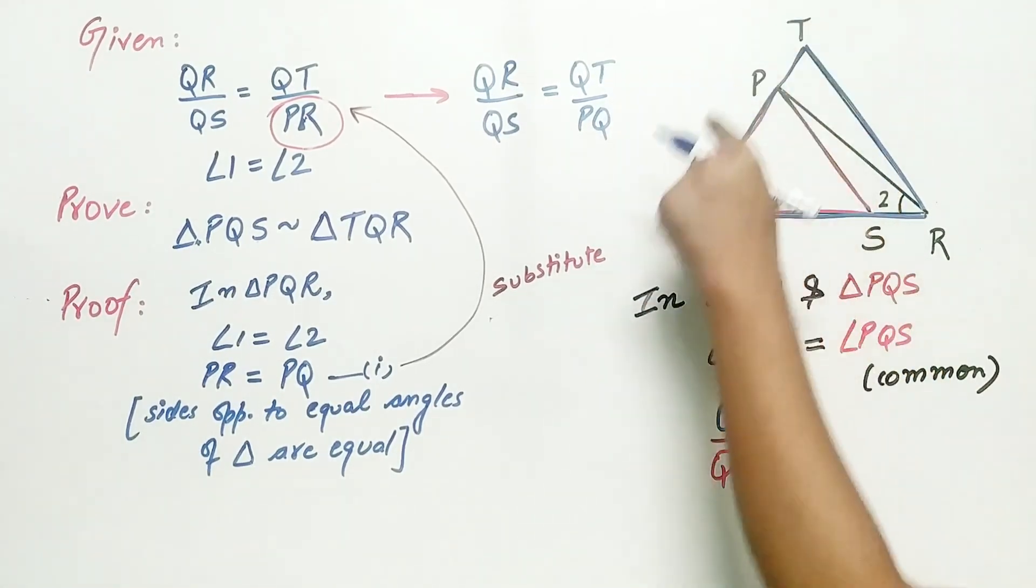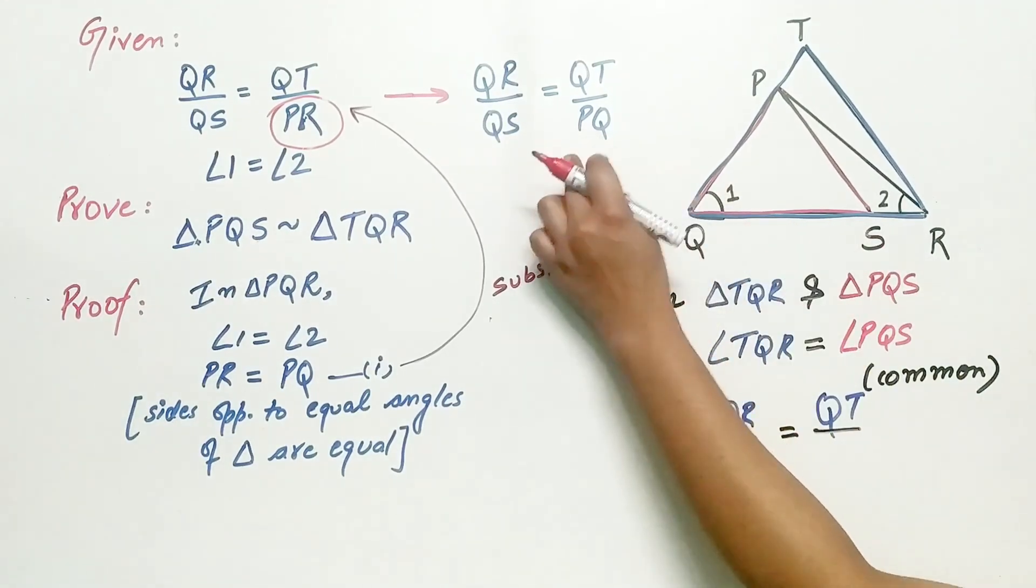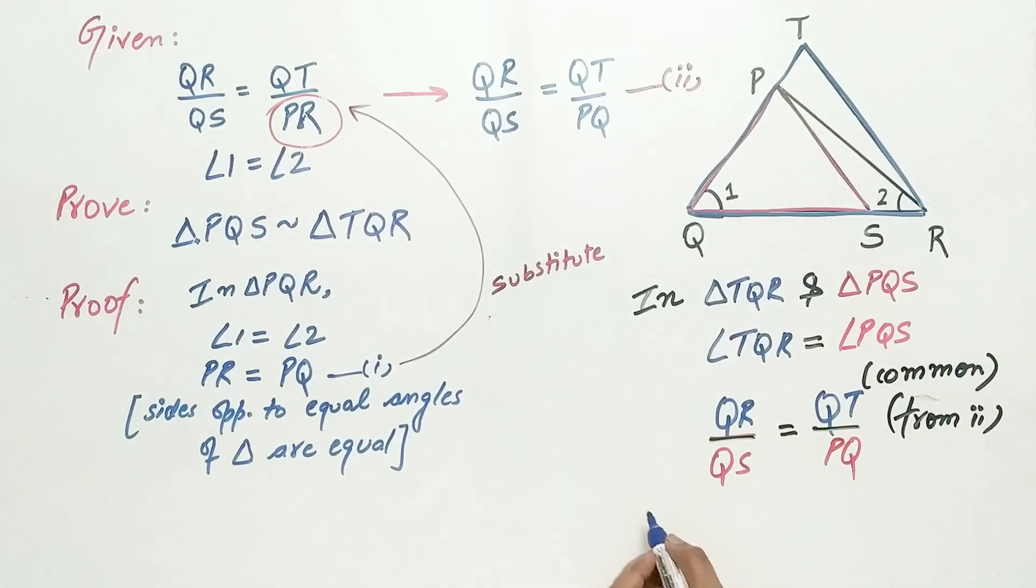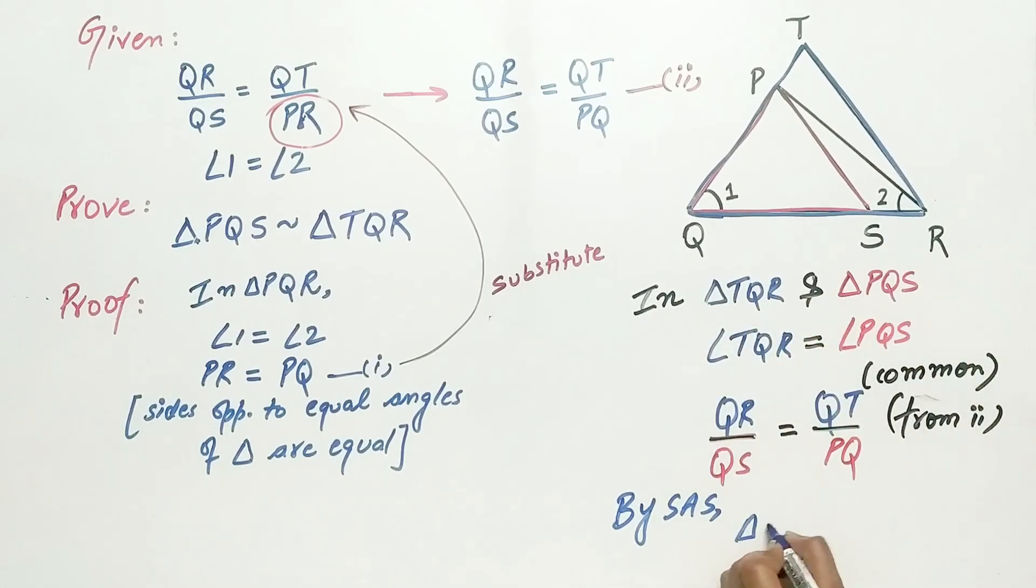QT is part of triangle TQR. And PQ is part of triangle PQR. By SAS, both the triangles are similar.